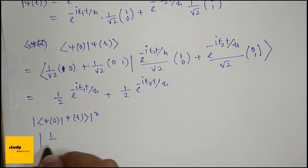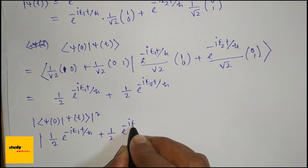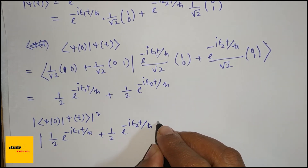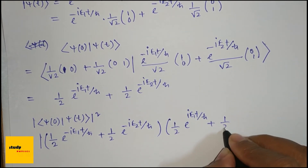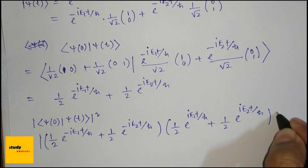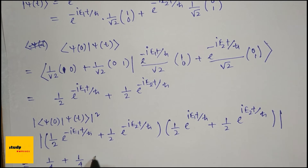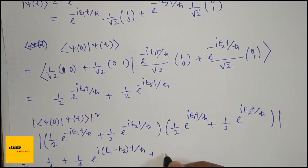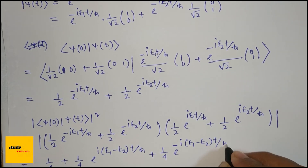So |⟨ψ(0)|ψ(t)⟩|² means we multiply: (1/2 e^{−iE1t/ℏ} + 1/2 e^{−iE2t/ℏ}) times its complex conjugate. This gives 1/4 plus 1/4 plus 1/4 times e^{i(E1−E2)t/ℏ} plus 1/4 times e^{−i(E1−E2)t/ℏ}.